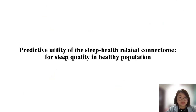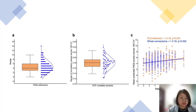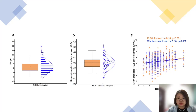We further tested the predictive utility of the sleep health-related connectome for sleep quality in the healthy population. Considering that the most contributing measure in the latent variable in the discovery and replication BBP samples was the PSQI total score, we examined the predictive utility of the sleep health-related connectome features for individual PSQI scores in a completely independent dataset. We found that the sleep health-related connectome can predict PSQI total scores for unrelated individuals in the Human Connectome Project.